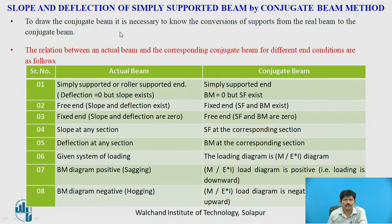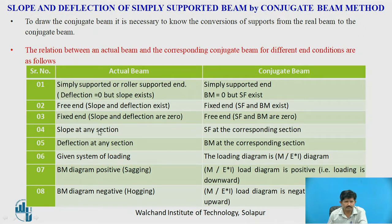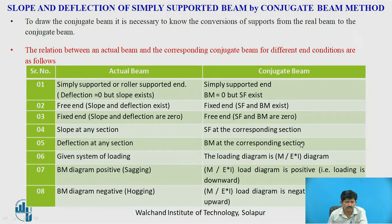To draw the conjugate beam, it is necessary to know the conversion of supports from the real beam to the conjugate beam. A simply supported or roller support will remain simply supported in the conjugate beam. A free end will become a fixed end in the conjugate beam, and a fixed end in the real beam will become a free end in the conjugate beam. The slope at any section in the actual beam will equal the shear force at the corresponding section in the conjugate beam, and deflection at any section will equal the bending moment at the corresponding section of the conjugate beam.